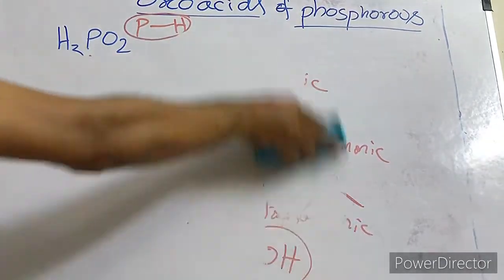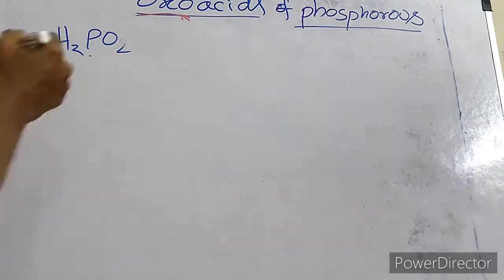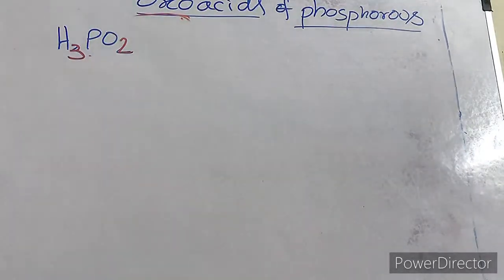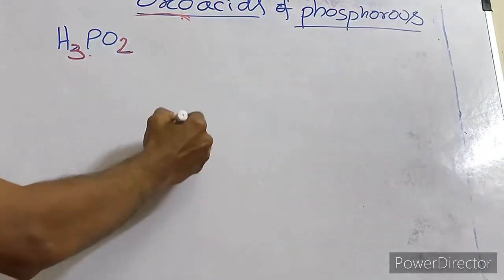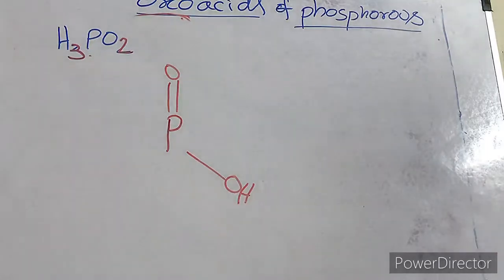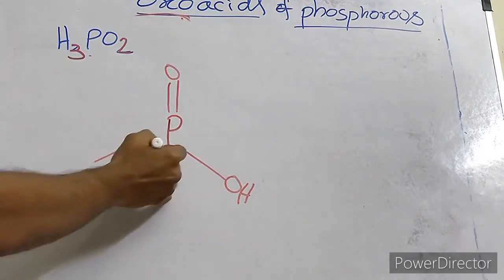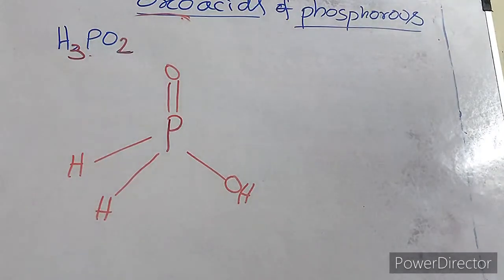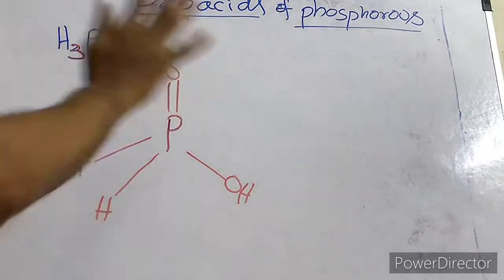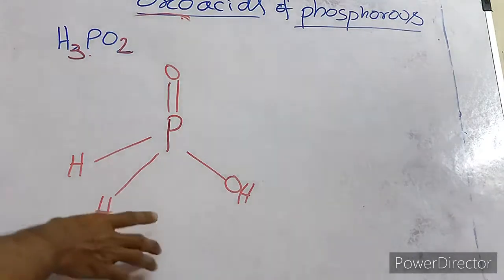Let us start with H3PO2, hypophosphorous acid. Take the phosphorus, put one P=O double bond and one P-OH — these two bonds are mostly present in all the compounds. Now we have used one oxygen and one OH. Two hydrogens remain, so we give both hydrogens directly as P-H bonds. This is H3PO2: tetrahedrally surrounded with OH, H, H, and =O. It has reducing properties due to the two P-H bonds.